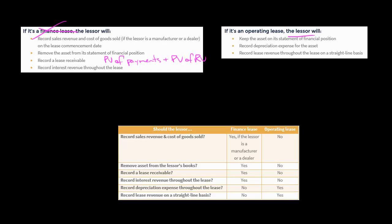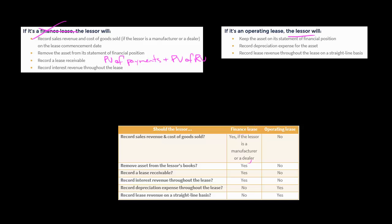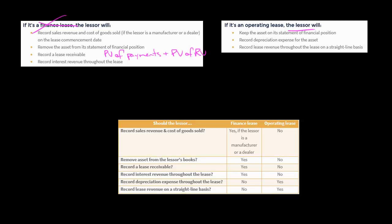I've got a summary here of the differences for finance lease and operating lease. Under a finance lease, we're going to book a sale and COGS, assuming the lessor is a manufacturer or dealer. You're going to remove the asset from the books, record a lease receivable, and then recognize interest revenue on that lease receivable over time. If it's an operating lease, the asset is staying on the lessor's statement of financial position. They're going to record depreciation over time, and they're going to be recognizing lease revenue on a straight-line basis.